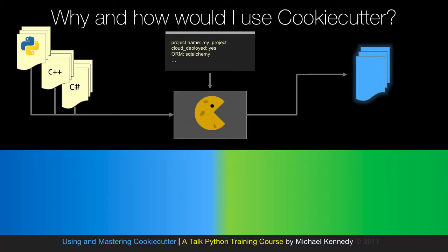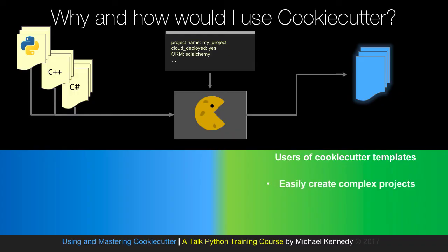So why and when would you use CookieCutter? I think of two general use cases. On one hand, you might just be a user who wants to create a project — you can more easily create complex projects, making the process more reliable. It's faster onboarding for new users: if there's a CookieCutter template, you can run one command and boom, you have a shiny new project ready to go.